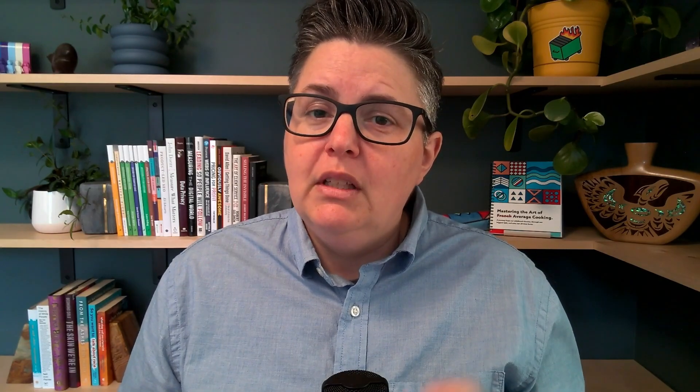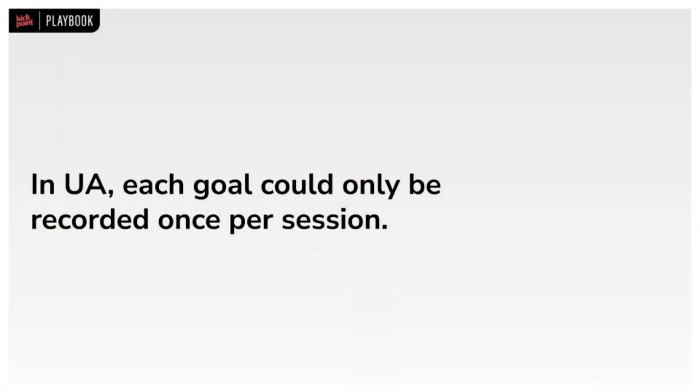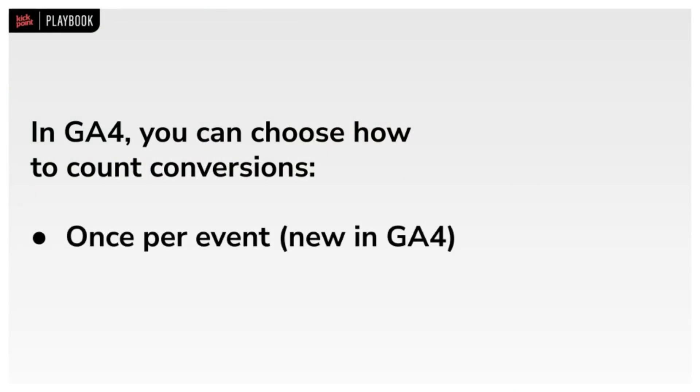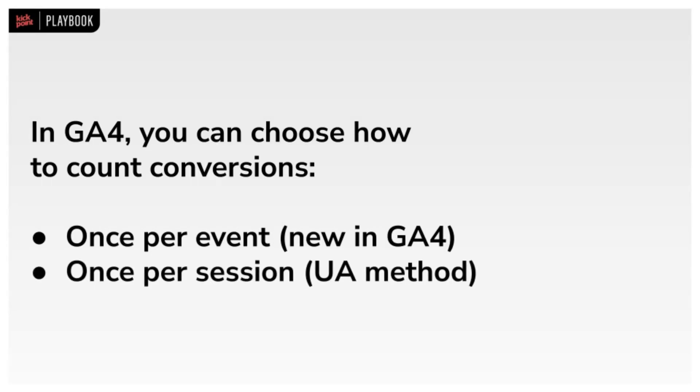In GA4, conversions are based entirely on events because GA4 is based entirely on events, but there are ways to recreate the things you used to track as events. The most important thing to know about conversions in GA4 is that there is an option to change how the conversion is counted, and that's important when comparing conversions between UA and GA4. In UA, a specific conversion goal would only be counted once per session — so if you filled out a form three times, you'd only have one conversion. In GA4, you now have the choice: they can be counted every time it happens — once per event — or you can change it to once per session. Make sure to check all of your conversions, especially if they were imported from UA.